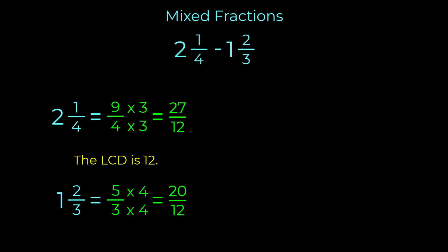So our problem has now become twenty-seven over twelve minus twenty over twelve. Subtract the numerators and leave the denominator the same. The answer is seven over twelve. This fraction is in its simplest form, and so we are done.